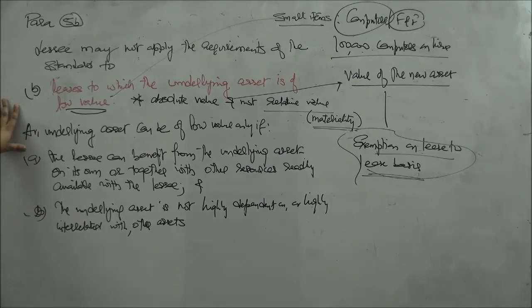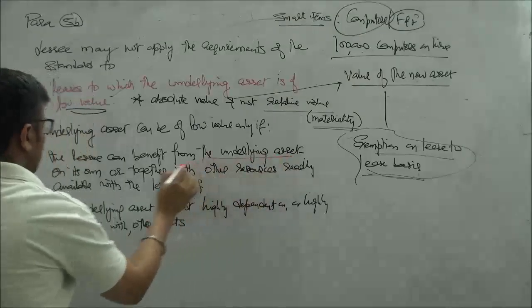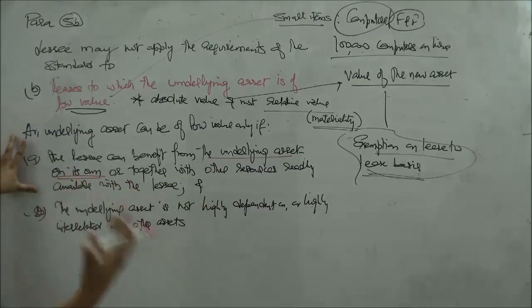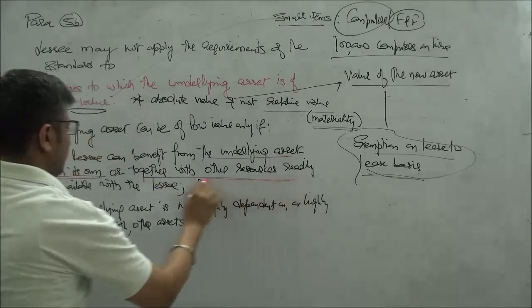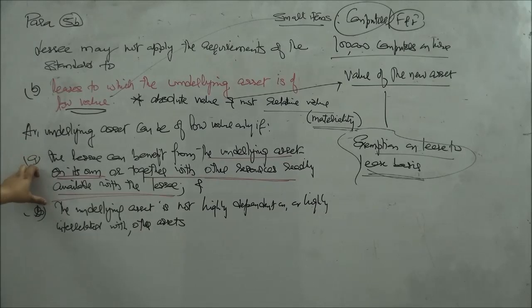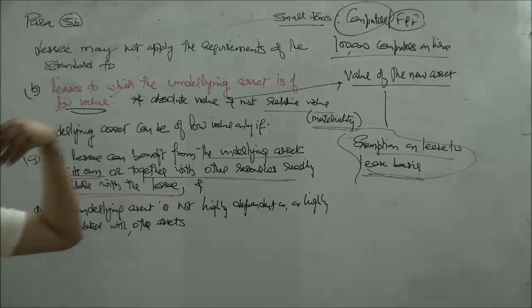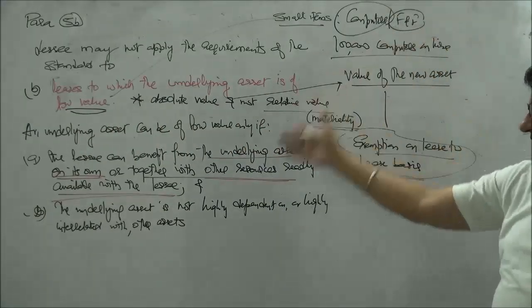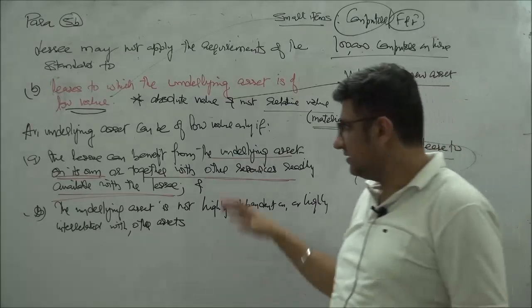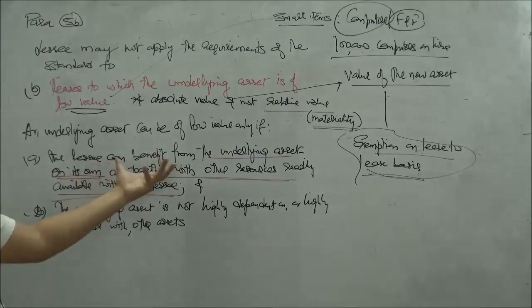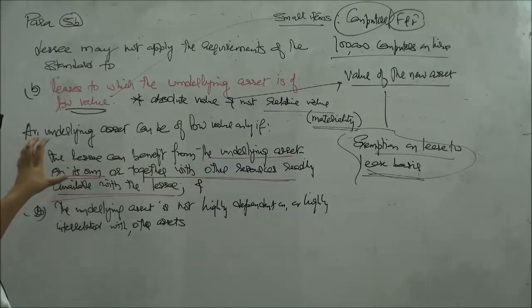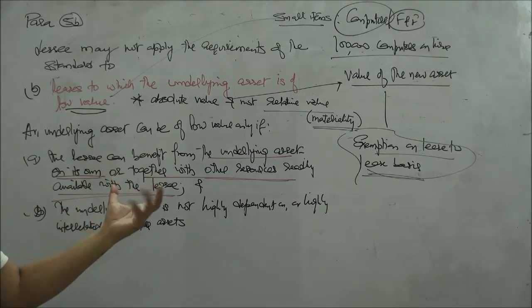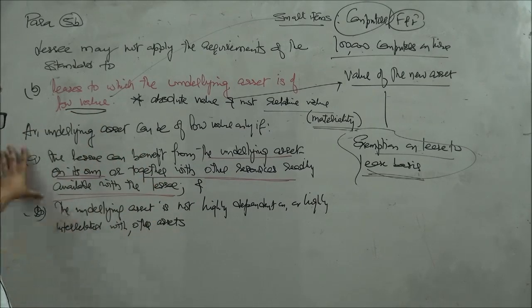That is where we go to the basis of conclusions where we say that an underlying asset can be of a low value only if a lessee can benefit from the underlying asset on its own—as good as an independent asset—or together with other resources readily available with the lessee. If the lessee already has some other assets, some other infrastructure, some other setup available, and you're taking some furniture kind of thing on lease, then there is a low-value asset which means that it is not highly dependent or highly interrelated with other assets.